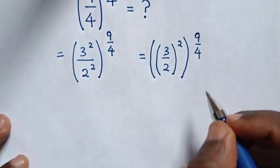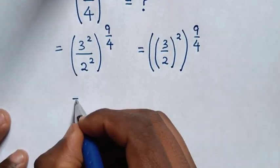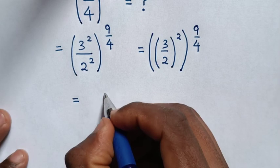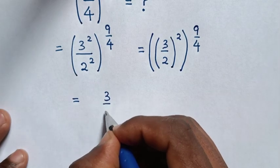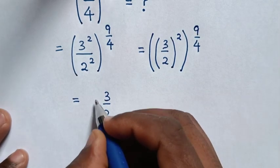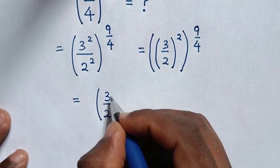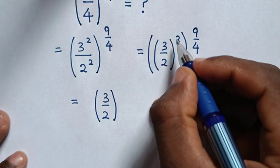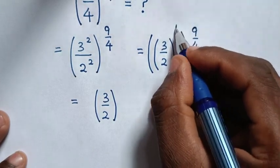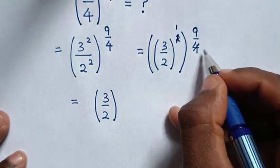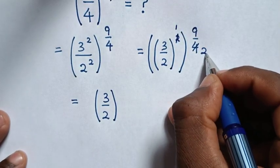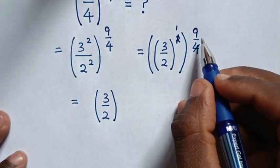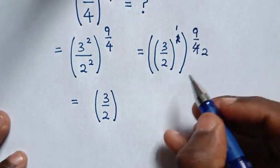Then in the next step, it will be equal to 3 over 2, in bracket. To simplify, this 2 will cancel by 1 and this 4 by 2, so it will be power of 9 over 2.